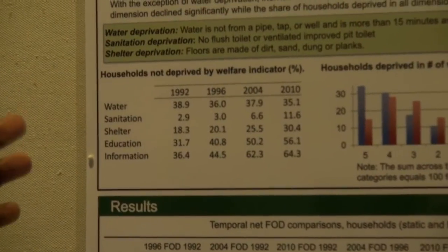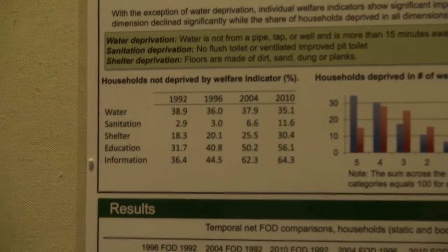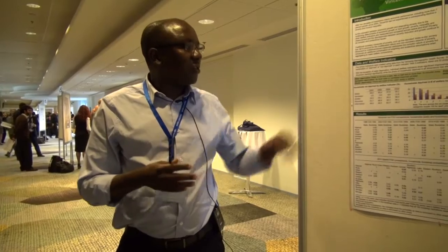We start by doing some simple descriptive analysis to see what is happening with these five welfare indicators. Comparing from 1992 to 2010 at the national level, with the exception of water, all other indicators have improved significantly. In 1992, only 2% had improved sanitation; by 2010 it's 11%. Shelter was 18%; by 2010 it's around 30%. Education was 31%; by 2010 a big improvement to 50–60%. The same can be said for information. What has not improved is access to water, which is well known in Tanzania, with reports showing the situation has worsened by 2025 due to rapid urbanization.